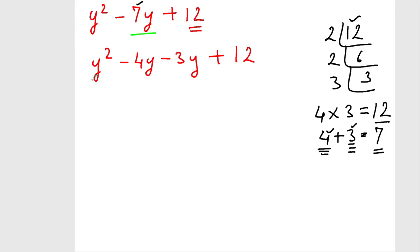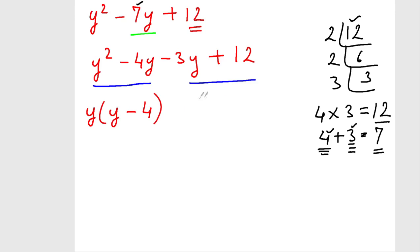Now again we have to do the regrouping as we have done earlier. Take the first two terms and the last two terms. Find what is common in y squared and minus 4y. The common factor is y. Taking y as common, what is left is y minus 4. Now be very careful about the sign — this sign comes as it is, so here is a minus sign. In the last two terms, 3y and 12, the common factor is 3.